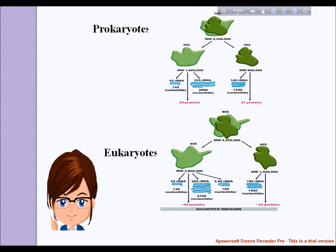The tertiary structure of the small subunit ribosomal rRNA has been resolved by X-ray crystallography. The secondary structure of SSU rRNA contains four distinct domains: the five-prime, central, three-prime major, and three-prime domains. The model of the secondary structure of the five-prime domain spans approximately 500 to 800 nucleotides.